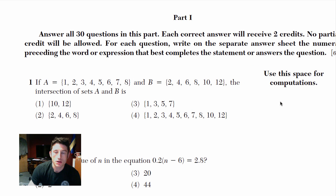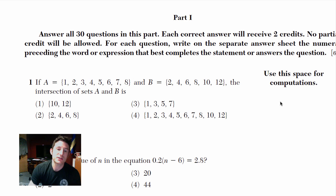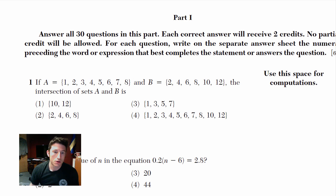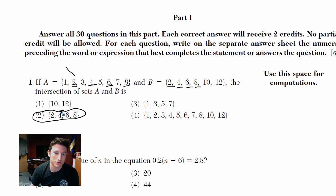Part one, number one: if A equals the set {1, 2, 3, 4, 5, 6, 7, 8} and B equals the set {2, 4, 6, 8, 10, 12}, the intersection of sets A and B is — when you're doing intersection, you're just looking for the common things in both sets. The common things are just the even numbers: 2, 4, 6, 8. Easy as that. You're just looking for the common stuff in intersection.